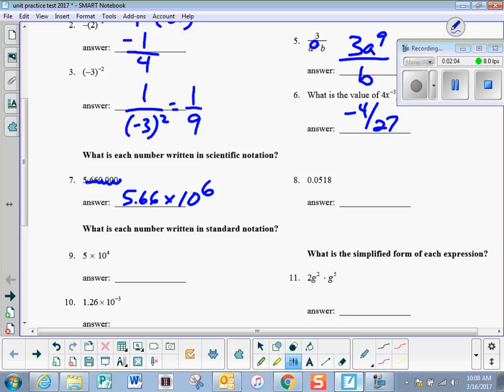Number 8, this would be 5.18 times 10 to the negative 2, because I make this bigger by 10, I make it smaller by 10 by multiplying by 10 to the negative 2.